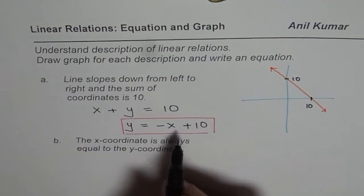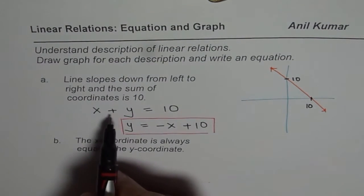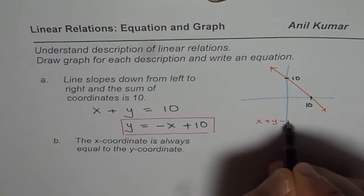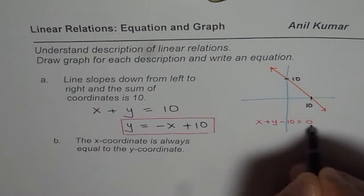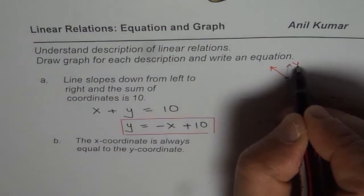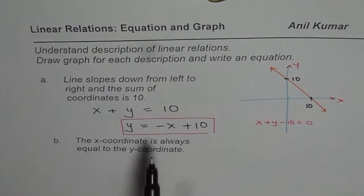This equation is in slope-intercept form. And this equation could be written as x plus y minus 10 equals 0 in standard form. So either way, the equations are as given here. And this fits fairly well with our description. I hope it is clear.